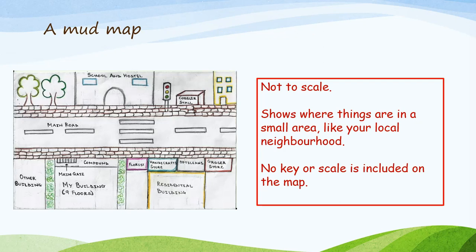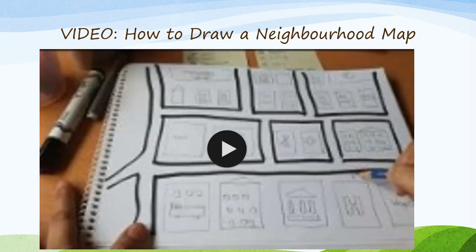And finally, a mud map. This is not to scale — it only shows where things are in a small area, like your local neighbourhood. No key or scale is included on the map. We're going to watch a short video on how to draw a neighbourhood map, because you will need to understand this in order to draw your own in the next activity.